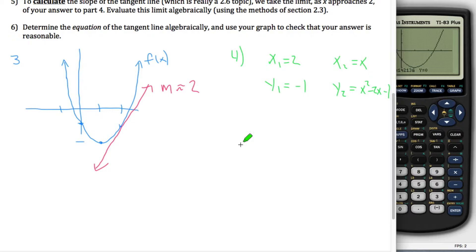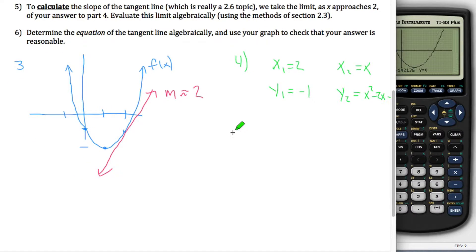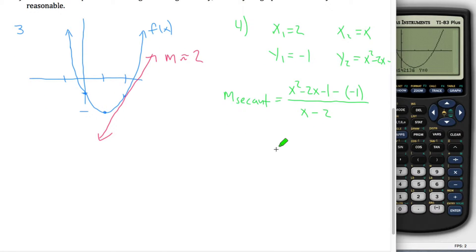So I can now take these 4 pieces of information and put them in to figure out the slope of the secant line. So m secant is y2, x squared minus 2x minus 1, minus y1, negative 1, divided by x2, which is x, minus x1, which is 2. If I felt like it, I could simplify this thing, x squared minus 2x minus 1 minus negative 1. If you're subtracting negative 1, you're really just adding 1. So I got minus 1 plus 1, I get x squared minus 2x divided by x minus 2. That's the slope of the secant line.